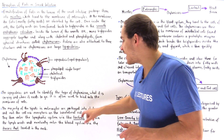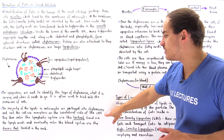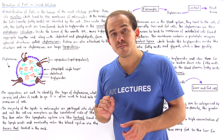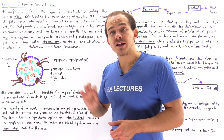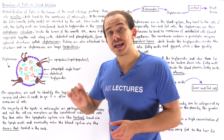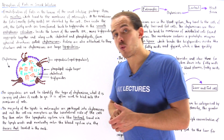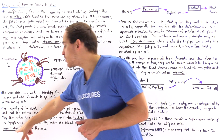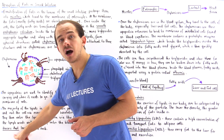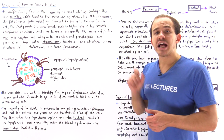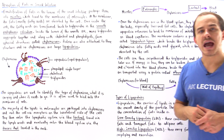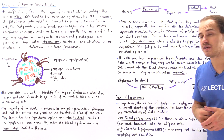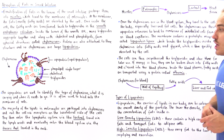Once inside the lacteal, they travel via the lymph vessels and eventually are dumped into our blood system via the thoracic duct, found in the neck, which connects with the left subclavian vein.